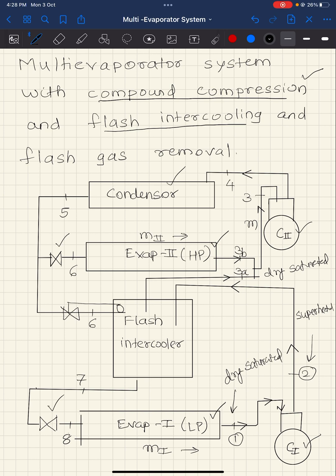The dry saturated vapor from the flash intercooler mixes with the refrigerant coming out of evaporator two at the intermediate pressure. That mixed state three enters compressor two. So the suction to compressor two is the result of mixing the refrigerant desuperheated in the flash intercooler and the refrigerant evaporated in evaporator two at intermediate pressure.